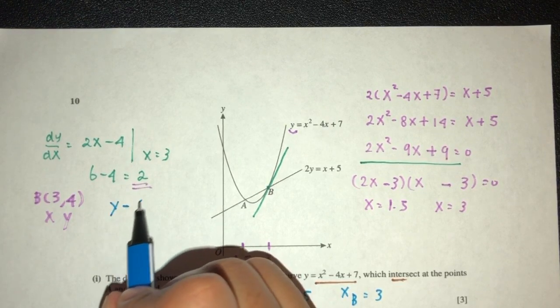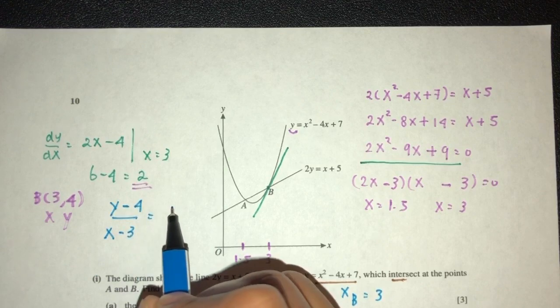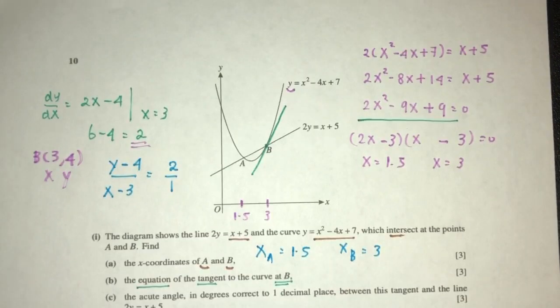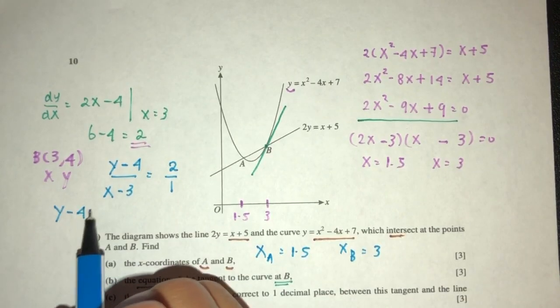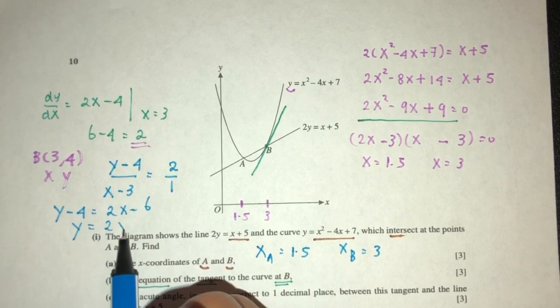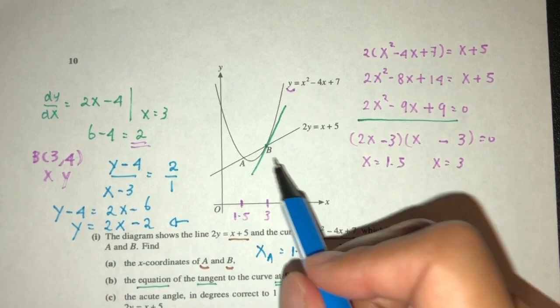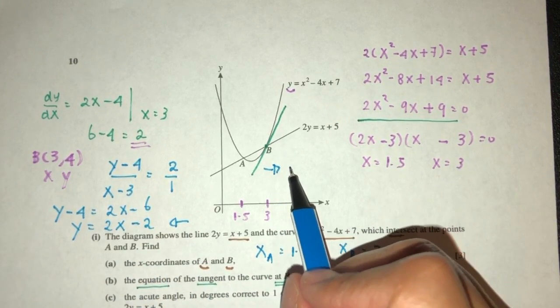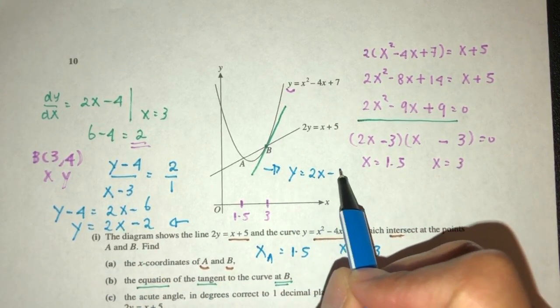So, y minus its corresponding value over x minus its corresponding value should be the gradient. Then, we cross-multiply. You have y minus 4 has to be 2x minus 6. So, y will be 2x minus 2. That is my equation of the tangent at the point B, y equal to 2x minus 2.